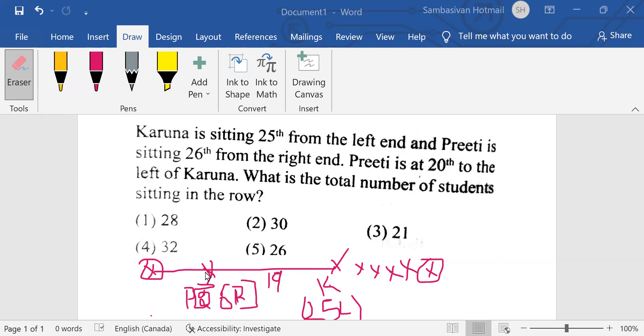And for this to become 26th from right, there should be five more candidates here. So totally from the left end, we have 30 candidates. Only 30 candidates are there in this.